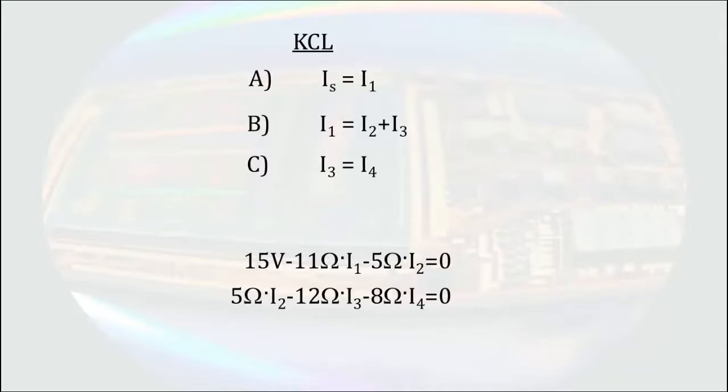Already we've reduced our system of equations to 5 equations with 5 unknowns. Since IS only appears in one equation and is not related to any other quantities, we'll ignore it for now.